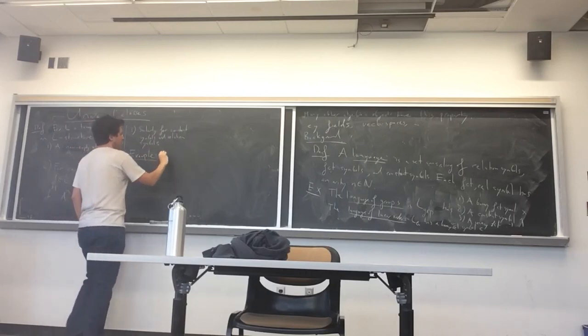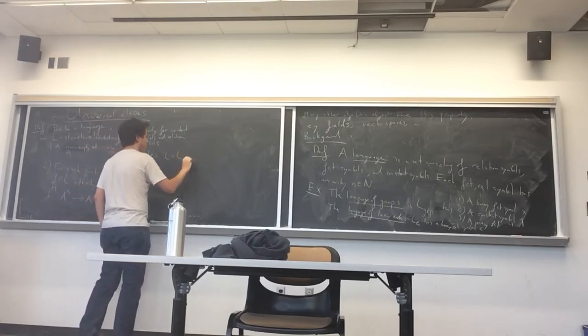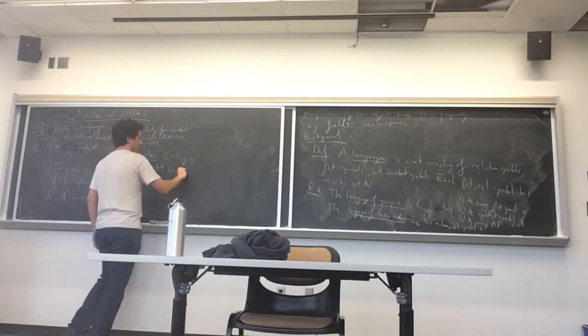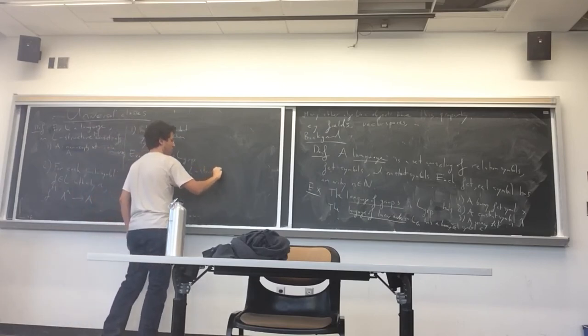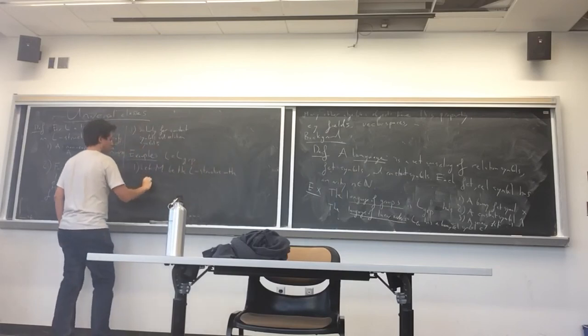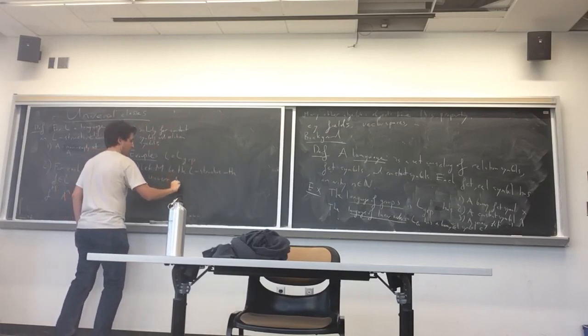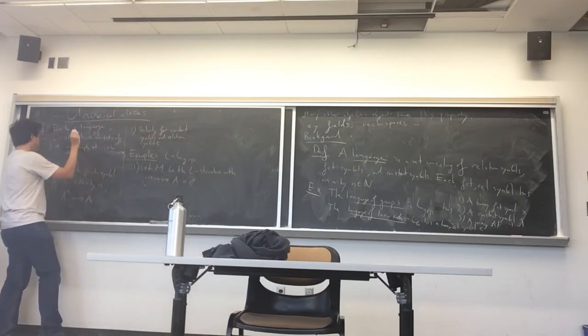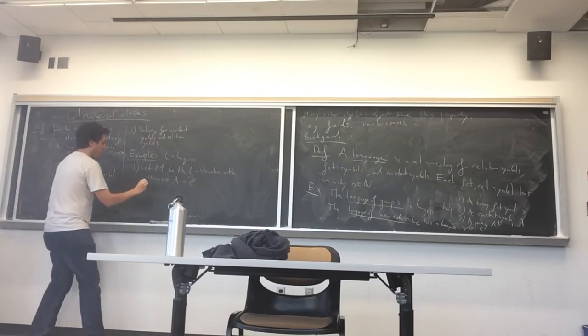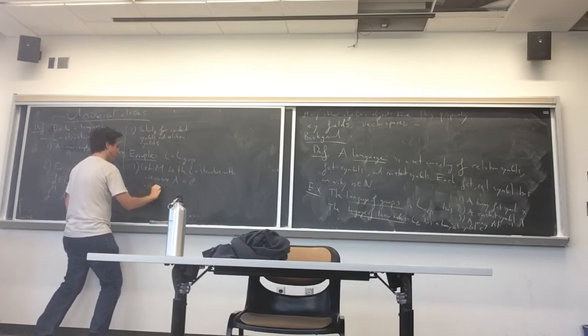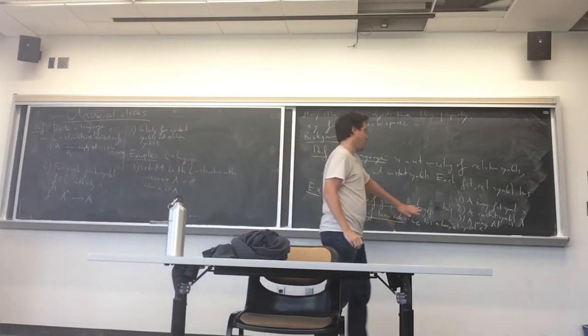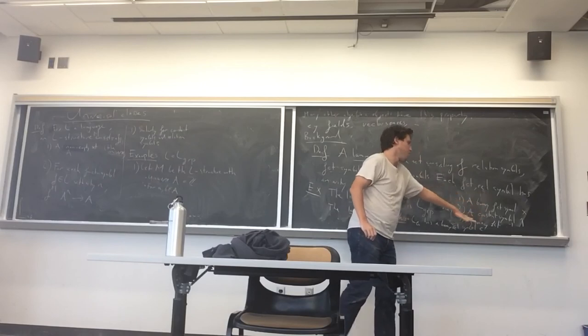So first, just work in the language of groups. So let's M be the M-structure. Okay so universe, I'll take it to be Z, so this is just a definition for the purpose of illustration. And then multiplication would be addition. So for a and b in A, I have to define, since I want to define a structure, I want to define interpretation for each of these things in the language of groups.